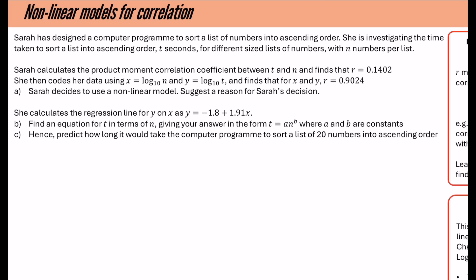So it says here that Sarah has designed a computer programme to sort a list of numbers into ascending order. She is investigating the time taken to sort a list into ascending order t seconds for different sized lists of numbers with n numbers per list. Sarah calculates the product moment correlation coefficient between t and n and finds that R is 0.1402. She then codes her data using x is log base 10 of n and y is log base 10 of t and finds that for x and y the value of R is different. It's 0.9024.